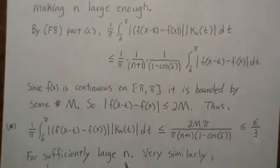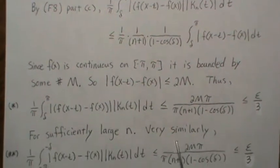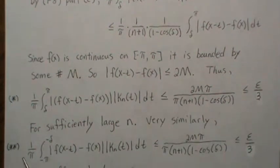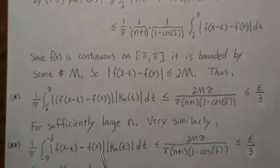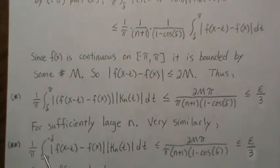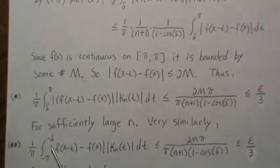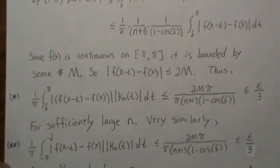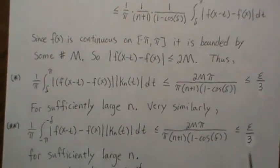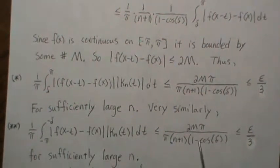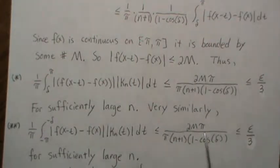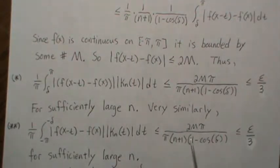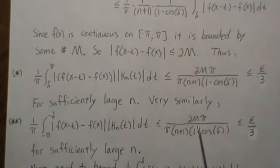Very similarly, we can make 2-star — the integral from −π to −δ — less than ε/3 as well. By the same argument, since these are all constants, as n grows this gets smaller, and at some point it's less than ε/3 for sufficiently large n.